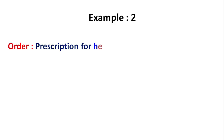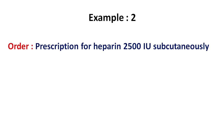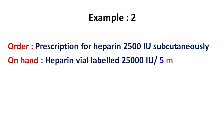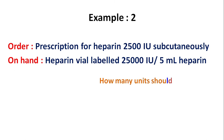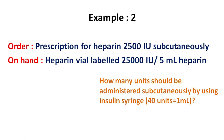Now for the second example: the doctor's order is heparin 2500 international units subcutaneously. On hand is a heparin vial labeled 25,000 international units per 5 ml heparin, as shown in this picture. How many units should be administered subcutaneously using an insulin syringe having 40 units in 1 ml?